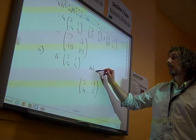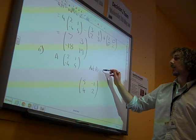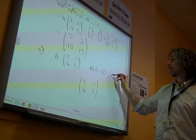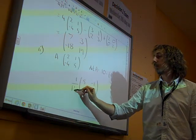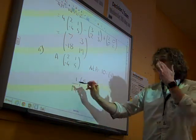And the determinant of A is 2 times 5, minus 4 times 1. So it's 14.